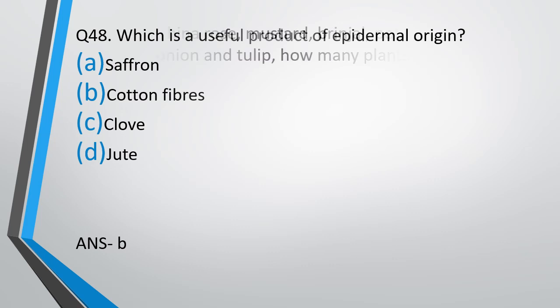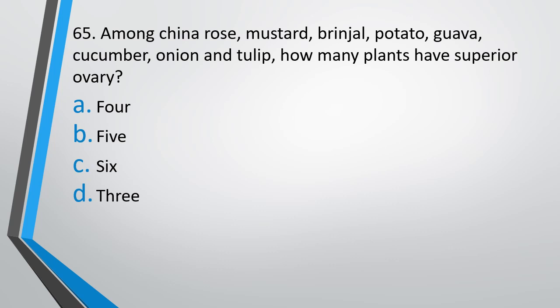Question No. 65. Among China Rose, Mustard, Brinjal, Potato, Guava, Cucumber, Onion, and Tulip, how many plants have superior ovaries? The correct answer is Option C: Six plants have superior ovaries.